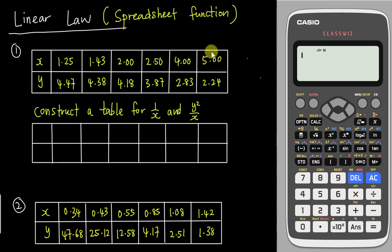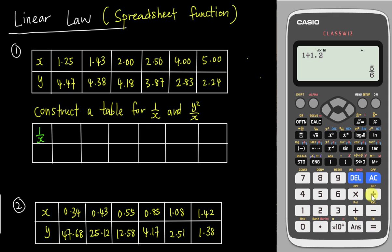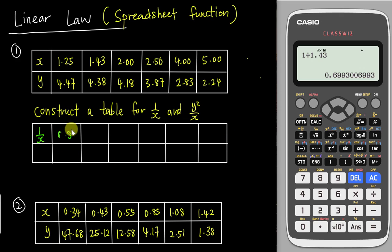Normally in this chapter, they will give you x and y values and then ask you to construct a table for 1/x and y²/x. If you do this manually, you need to do them one by one — for example, 1 divided by 1.25, then 1 divided by 1.43, and so on. It's going to take some time because you need to do about 12 of them.